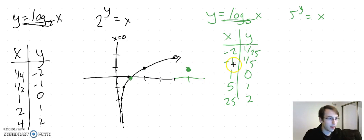So x equals 5 when y equals 1, and for negative 1... Oh, I did this backwards. That's negative one, that's negative two. x should be one fifth and one twenty-fifth.